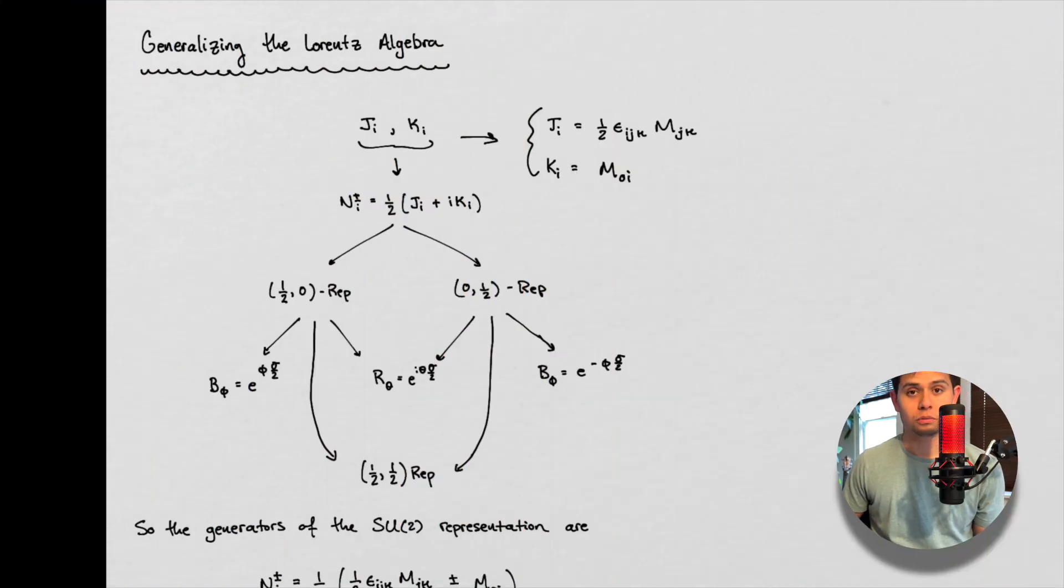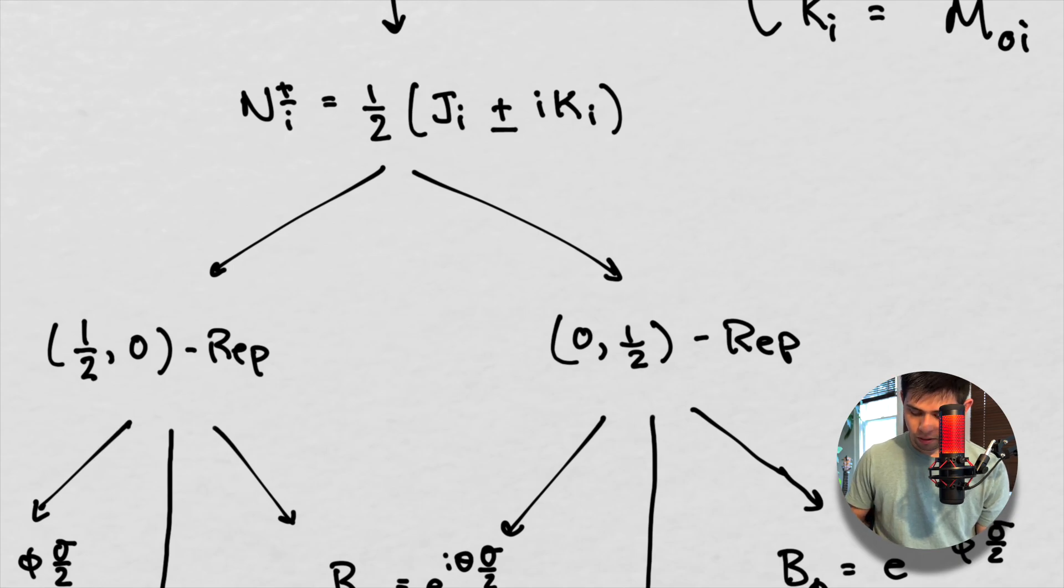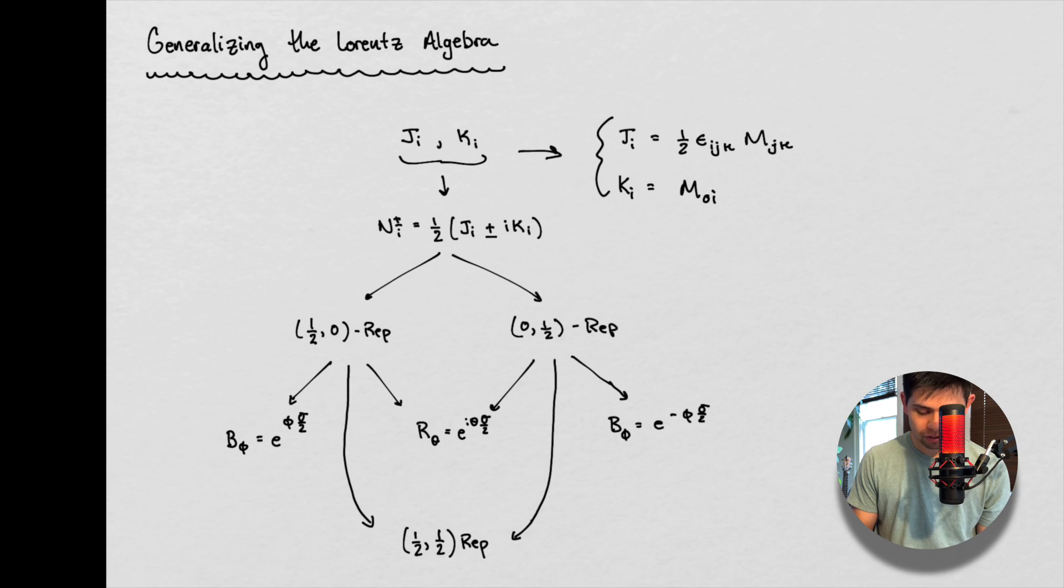So we are generalizing the Lorentz algebra today. And in doing that, here's sort of the mind map we want to keep in mind. So we started off with our boosts and our rotations, which are these guys right here. These are the generators. These are the things that when you exponentiate them, you get your standard rotation matrices and so forth. And so we grouped these guys into these N matrices. These N matrices were two linearly independent groups of matrices that consisted of a specific combination. And I'm realizing right now there needs to be a minus right here. But this consisted of a combination, a linear combination of these two guys right here.